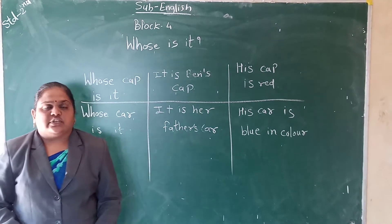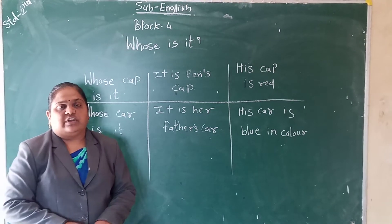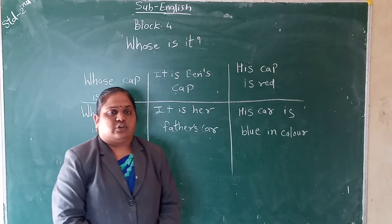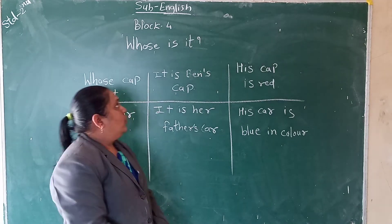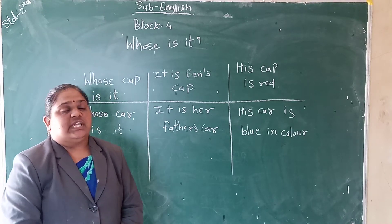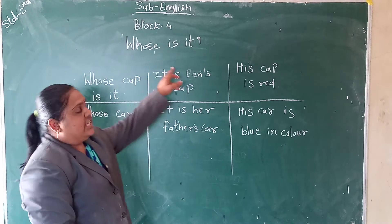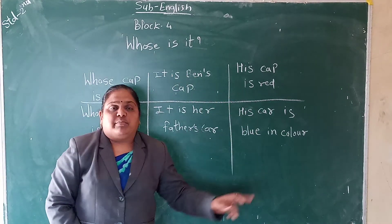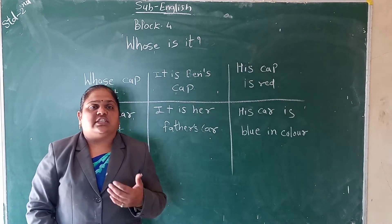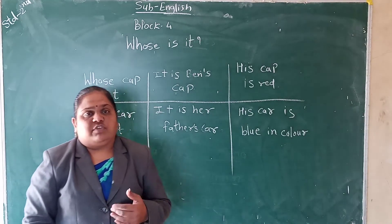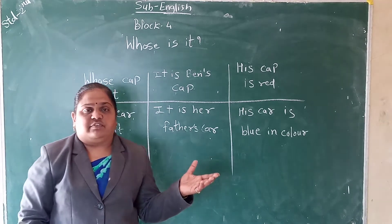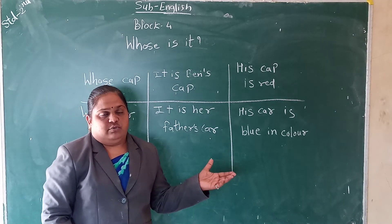Hi students, today we are going to see English block number 4 and the topic is 'Who is it? Whose is it? It belongs to us.' Means, what the things belong to us — we will write in these sentences and we will see.